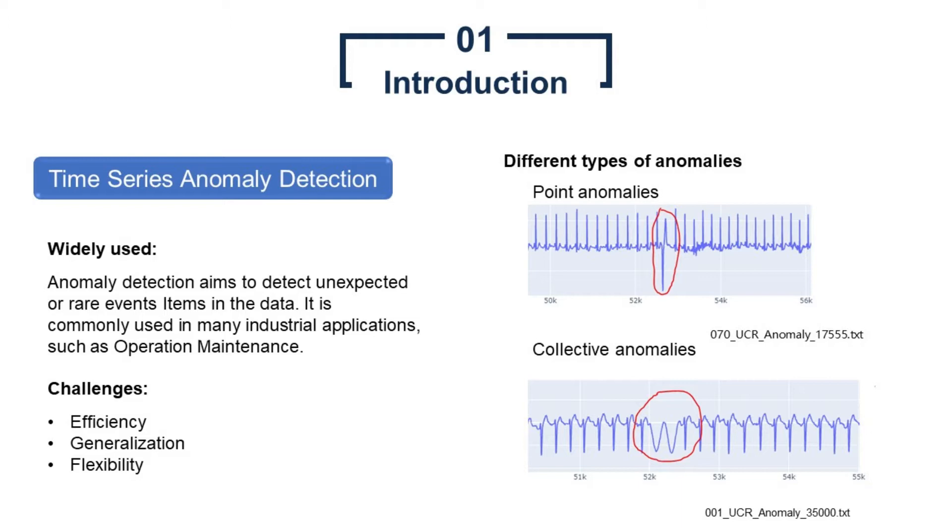Anomaly detection aims to detect unexpected or rare events in data. It is commonly used in many industrial applications, such as operation maintenance, industry monitoring, product price online monitoring, etc. However, many challenges exist in developing an anomaly detection tool, especially when high-level automation is required. First, there are many kinds of anomalies. Plots on the right show two types: point anomalies and collective anomalies. Generally speaking, point anomalies are easier to detect, while many algorithms lack the ability in finding collective anomalies.